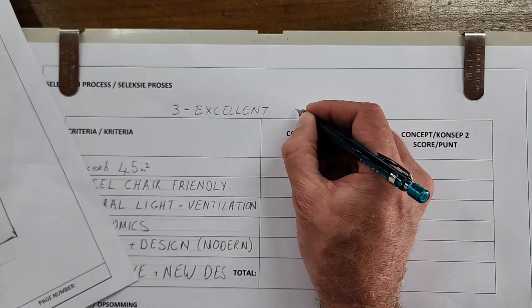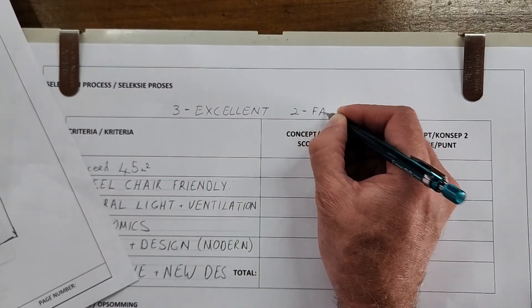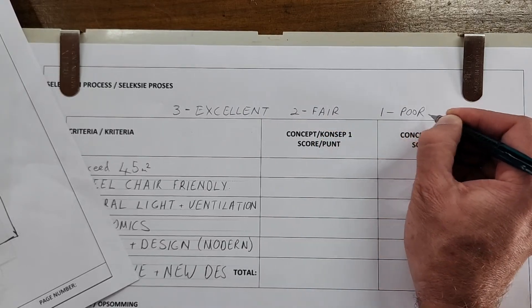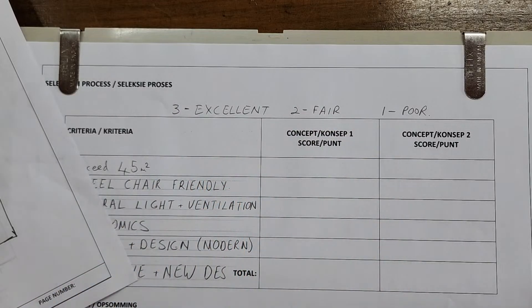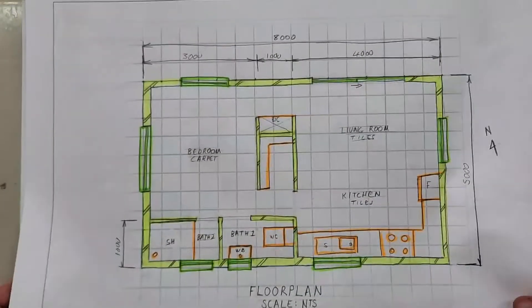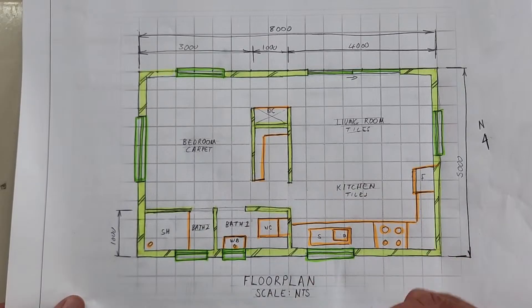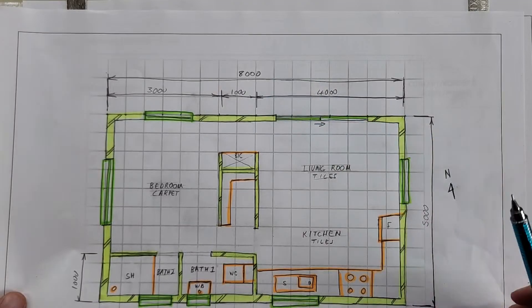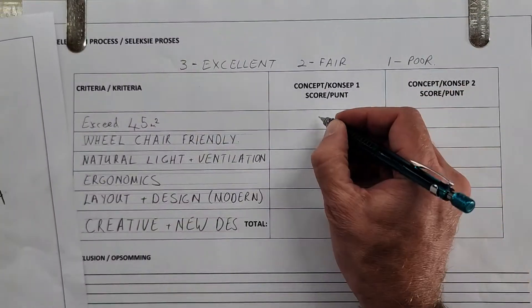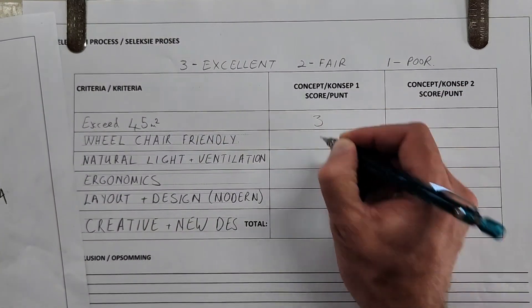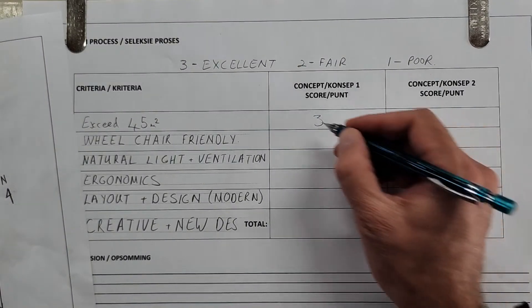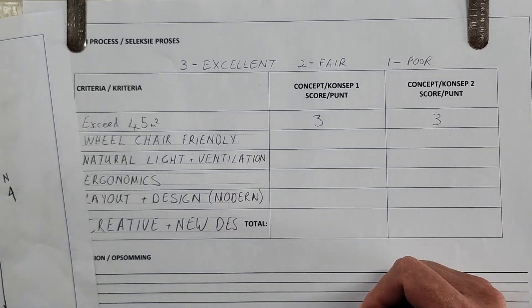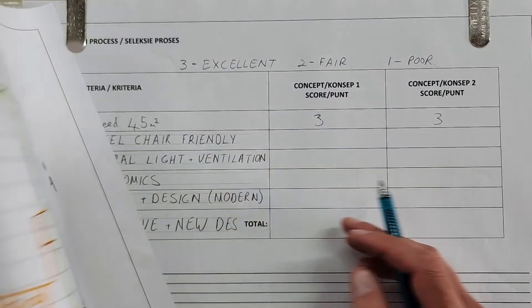Now we can go back to concept one and we are going to come up with a rating scale. Let's do we say three out of three is excellent, two out of three would be fair or good, and one out of three would be poor. So now there's a very simple scale that we can use to rate our own drawing.